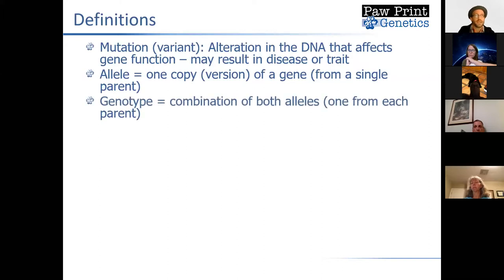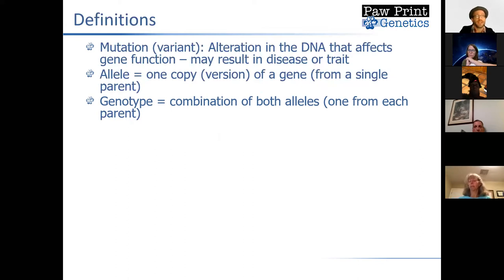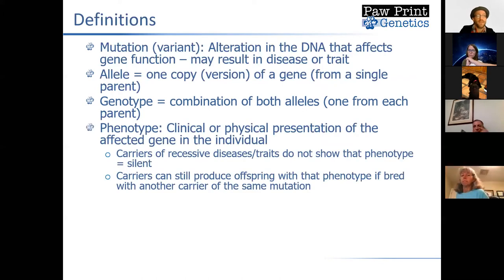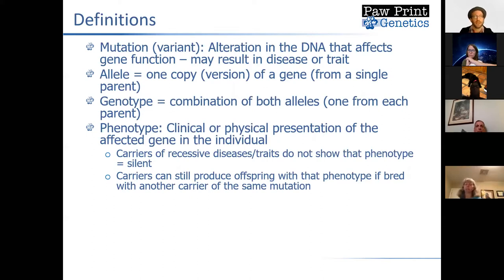The genotype is what we refer to as the combination of both of these alleles — a dog's combination at any specific location in the genome, for a particular gene. It's often designated with a very particular nomenclature, and each lab is a little bit different in how they show this. Then we have phenotype. The genotype is the genetics behind a particular trait or disease, and the phenotype is what actually happens — the clinical or physical presentation of the affected gene.